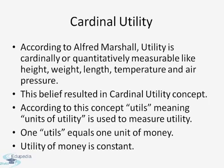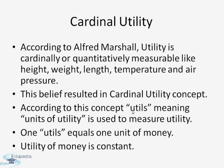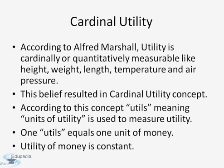The classical economists, for example Alfred Marshall, gave the concept that utility is cardinally or quantitatively measurable — like height, weight, length, temperature and air pressure. This belief resulted in the cardinal utility concept. According to this concept, utils (units of utility) are used to measure utility. One util is considered equal to one unit of money, and the utility of money is constant — so one rupee equals one util, two rupees equal two utils.